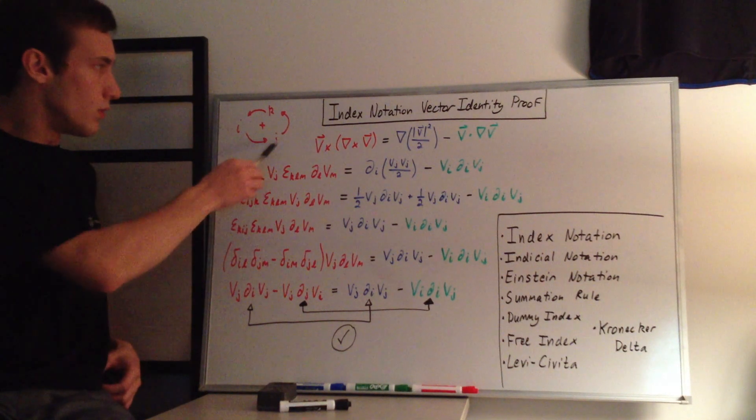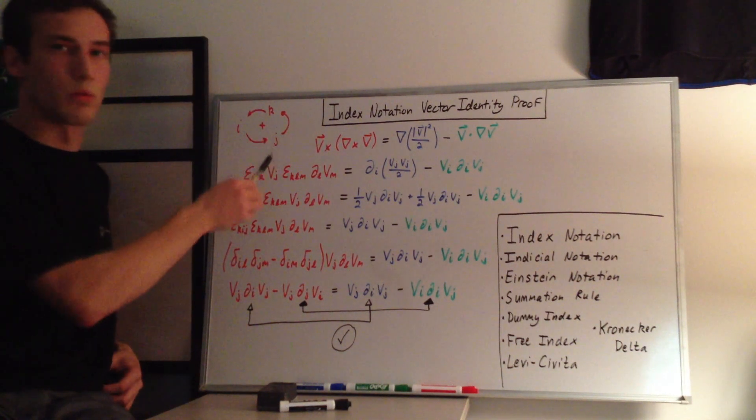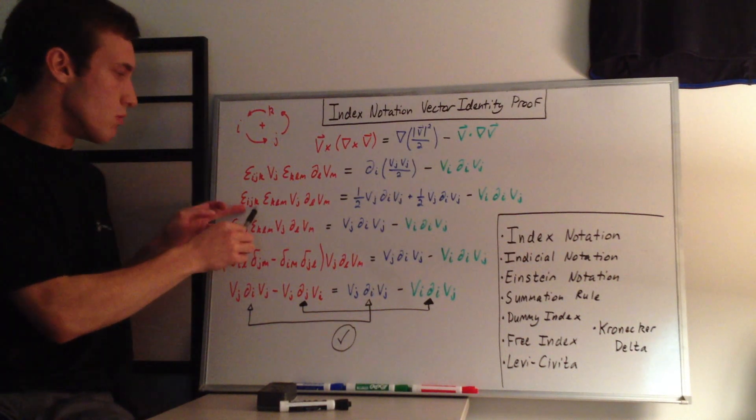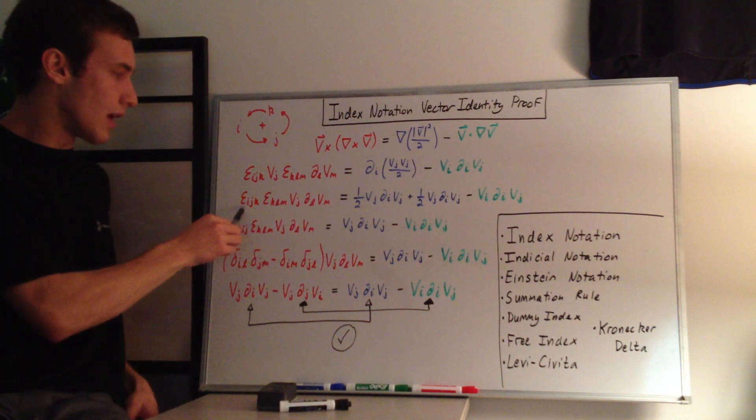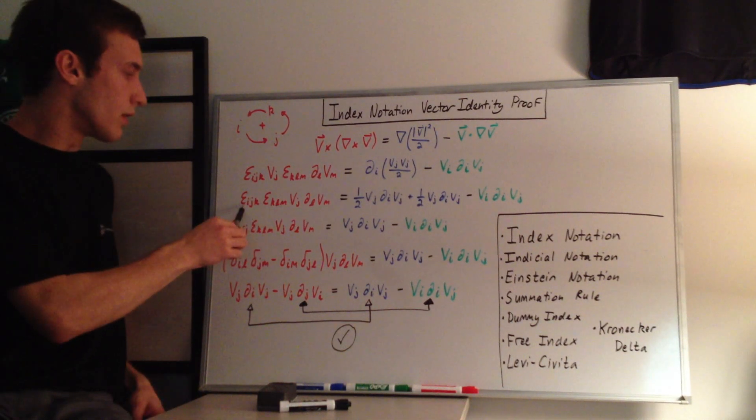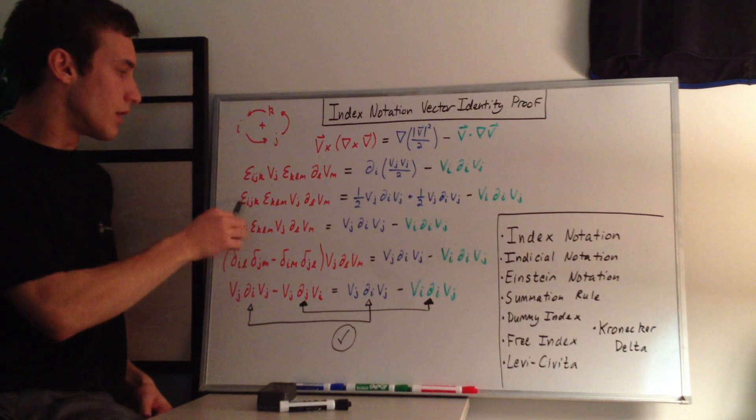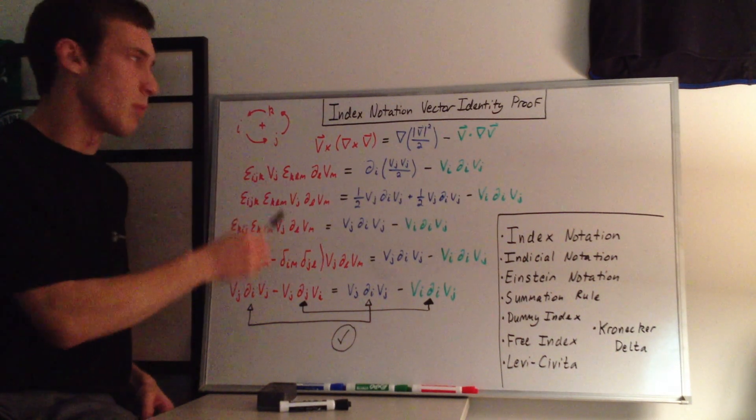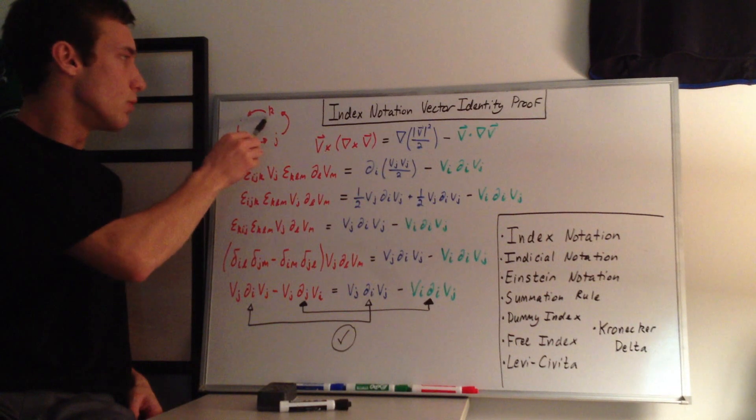Now what I did here is I used this cyclic rule. So what you can do is you can move the k to the front. We need to get the k to the front to match up with this k. So if we move the k to the front, we know that the epsilon stays positive because we're doing it in a cyclic manner. So this is positive. So if I'm moving the k to the front, as long as it goes k, i, j, it's still positive.